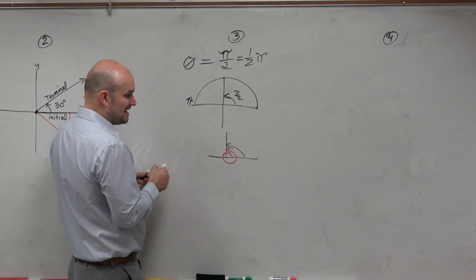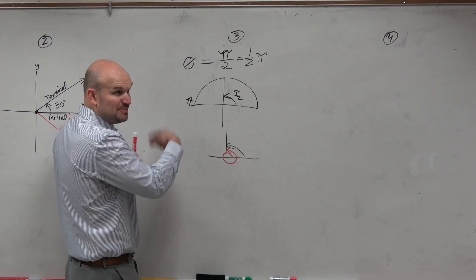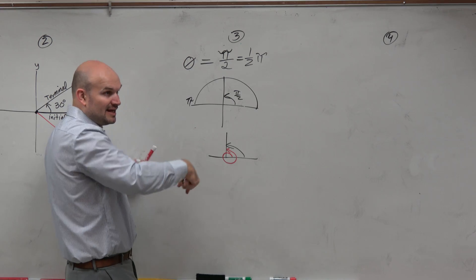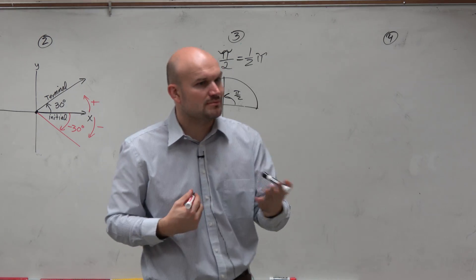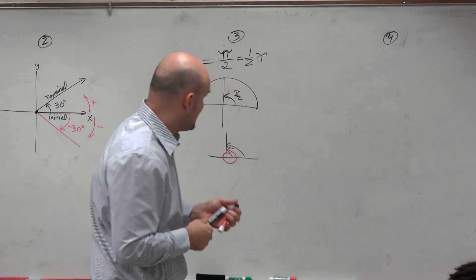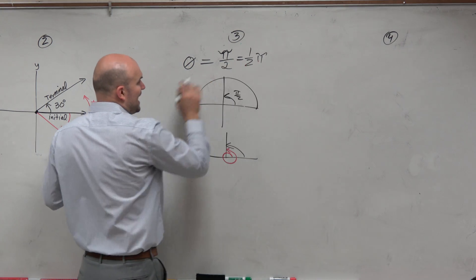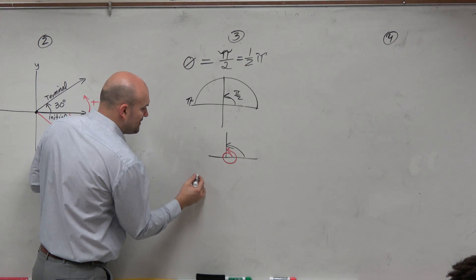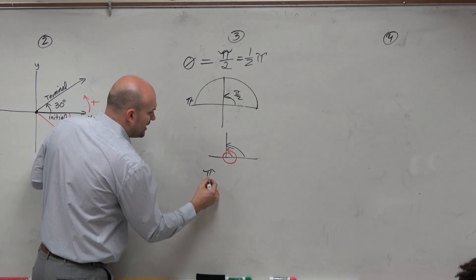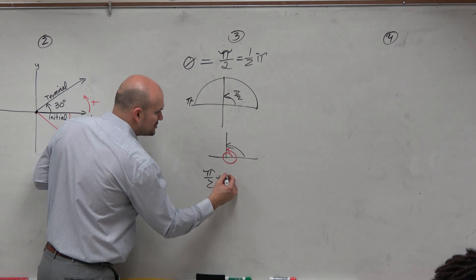And then could I do that again? Could I add 2 pi again? Could I add it again and again and again? And guess what? There's infinite many coterminal angles. So the way that we do that is we just want to add 2 pi. So if I want to find my coterminal angle, I have pi halves. I'm just going to add 2 pi.